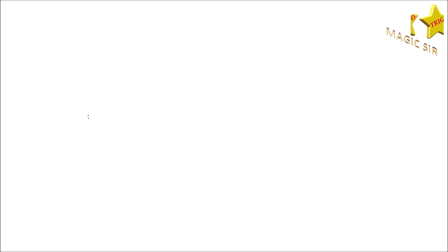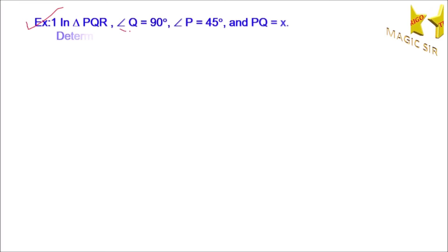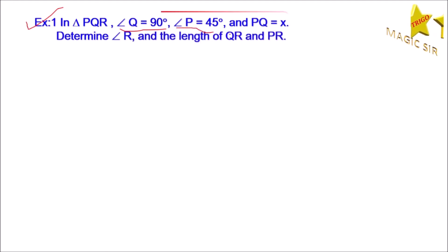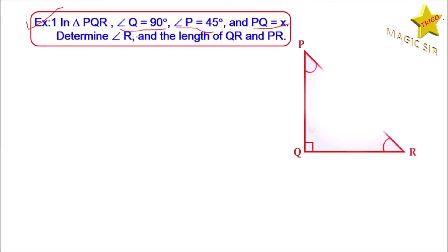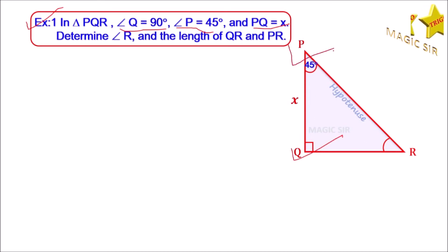Let us take the first example. In triangle PQR, angle Q is equal to 90 degrees, angle P is equal to 45 degrees, and PQ is equal to X. We have to determine angle R and the length of QR and hypotenuse PR. See in the figure, angle Q is equal to 90 degrees, angle P is equal to 45 degrees, and PQ is equal to X.